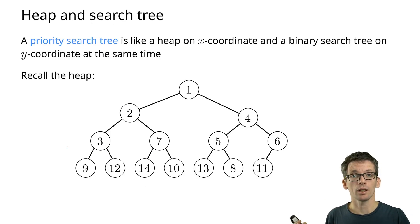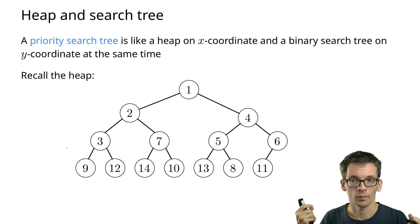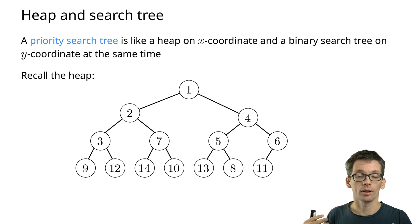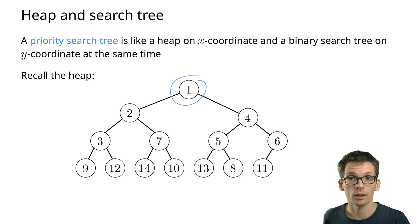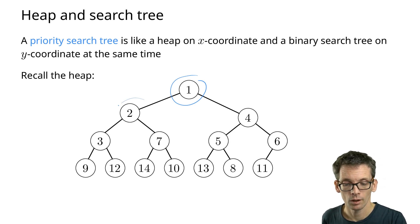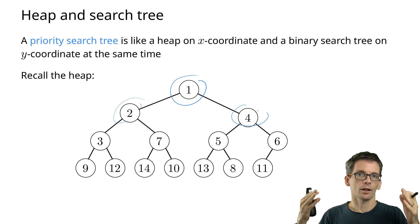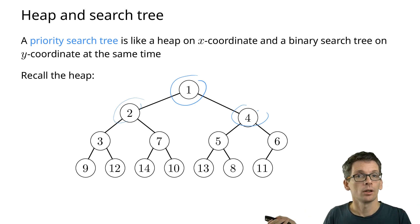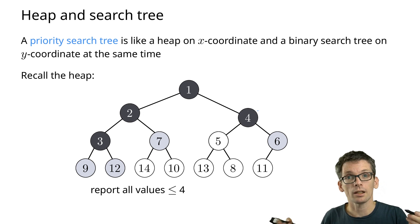A priority search tree is essentially the combination of a heap and a binary search tree. A heap is a nearly complete binary tree with the min-heap property, meaning the key of a node is smaller or equal to the keys of its children. If you think of the 1D version of three-sided queries — finding all numbers smaller or equal to four — this can be solved with a min-heap.